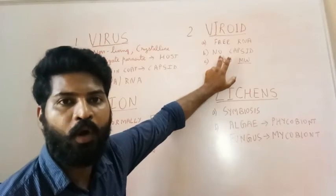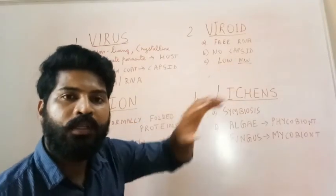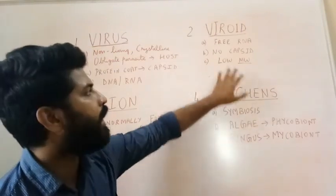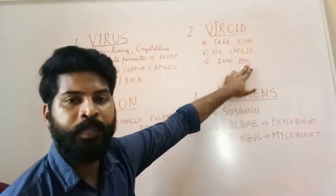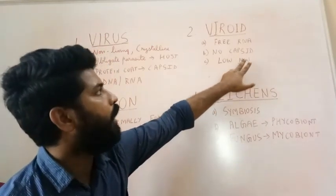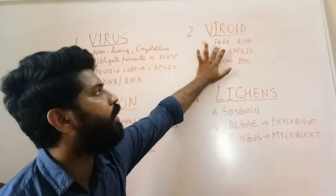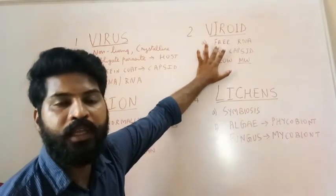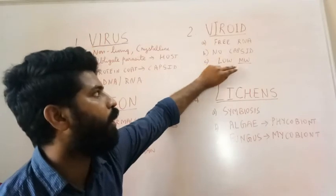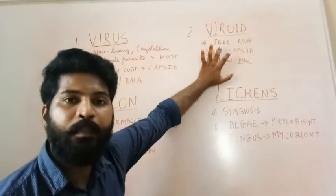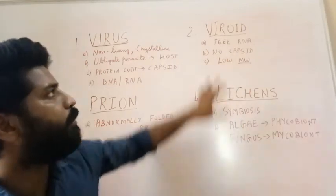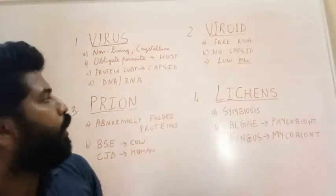Moving on to viroids: it is called viroid because it does not contain the outer protein coat called a capsid. The protein coat is absent, giving it a low molecular weight — smaller than viruses. It is just a free-floating RNA without any capsid. This RNA can be infectious and is known to infect plants.